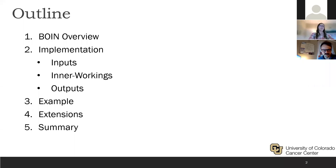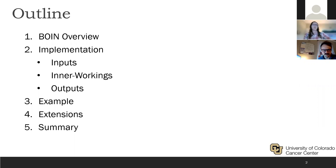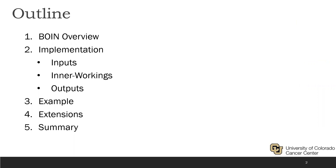Thanks, Andrew. Last week, my colleague Andrew gave an overview of different Phase I clinical trial designs, and today I'm going to be focusing on the Bayesian Optimal Interval Design, abbreviated as BOIN, which is one of the Phase I clinical trial designs that our cancer center highly recommends. Today I'll first give a brief overview of the BOIN design and how it compares with the 3+3 design, then talk about how it's implemented, go through a brief example, cover extensions of the BOIN design, and give a brief summary.